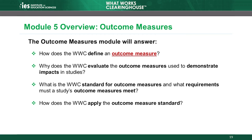The fifth module discusses the outcome measures a study uses to measure the effectiveness of an intervention and what requirements those measures must meet. This module reviews the WWC's definition of an outcome measure and explains why the WWC evaluates the outcome measures used to demonstrate impacts in studies. We describe the WWC requirements for outcome measures and illustrate how to apply the outcome measure standard.